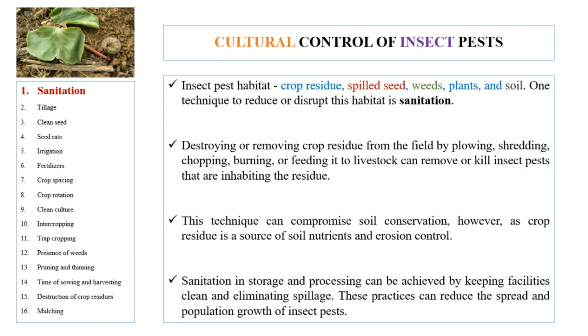Crop residue is basically a source of soil nutrients and it can also be used as an erosion control method. Therefore, blowing, shredding, chopping, or feeding it to livestock are the best methods that can be used to remove crop residue. Turning to sanitation in stored grains, moistened grains have greater chances of being infested by insect pests.